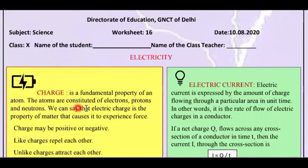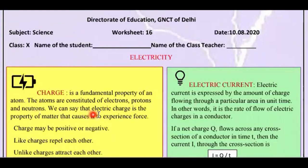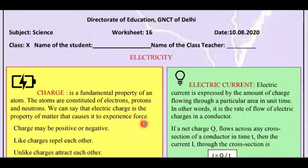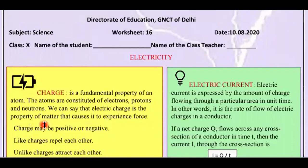The atoms are constituted of electrons, protons, and neutrons. So in atoms there are three constituents: one is electron, one is proton, and one is neutron. We can say that electric charge is the property of matter that causes it to experience force.